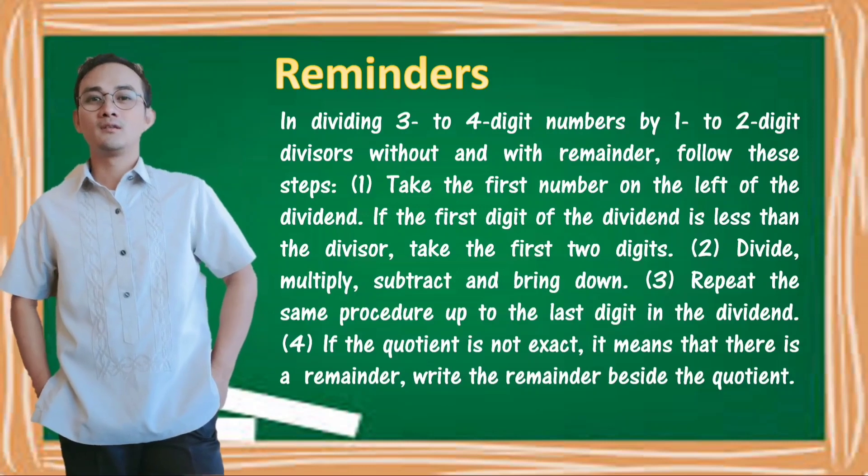Reminders: In dividing 3 to 4-digit numbers by 1 to 2-digit divisors without and with remainder, follow these steps. Take the first number on the left of the dividend. If the first digit of the dividend is less than the divisor, take the first two digits. Divide, multiply, subtract, and bring down. Repeat the same procedure up to the last digit in the dividend. If the quotient is not exact, it means that there is a remainder. Write the remainder beside the quotient.